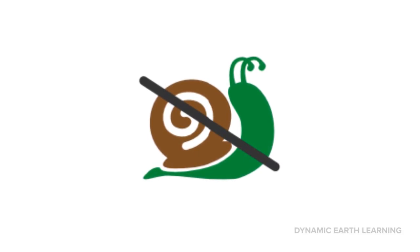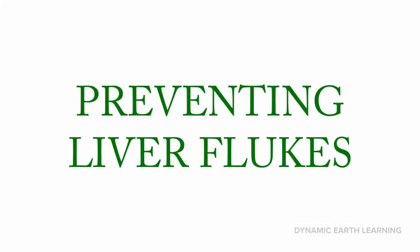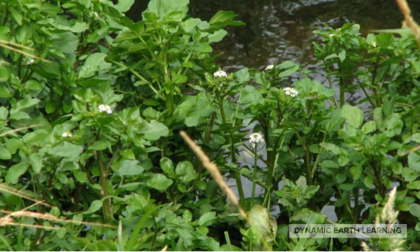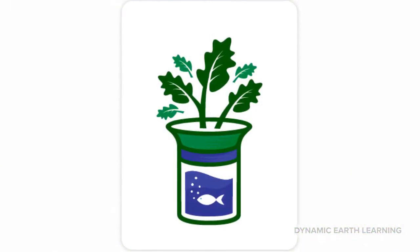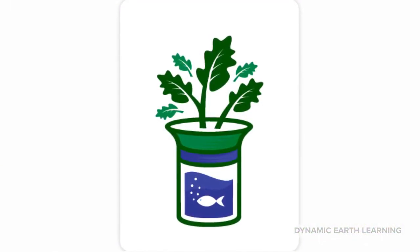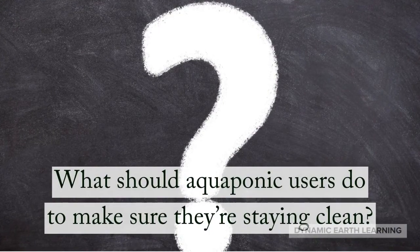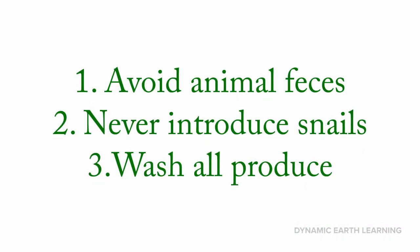It's recommended to always keep the water clean and free from snails. Watercress and other plants that grow in flooded areas are commonly infected with liver flukes, and any type of plant grown using aquaponics could be susceptible. Aquaponic growers prevent liver flukes by avoiding animal feces infecting the system, never introducing snails, and washing all produce thoroughly before consuming.